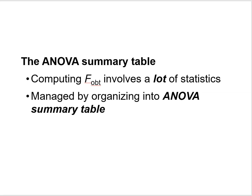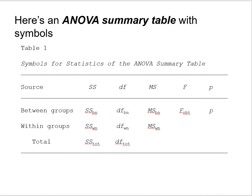The ANOVA summary table: computing an obtained F statistic involves a lot of statistics, which can get confusing if you're reading through a textbook chapter linearly. Most students and researchers find it easier to organize all of these statistics into an ANOVA summary table. Here's an example of an ANOVA summary table with symbols. Normally when you see one in a published journal article it won't have symbols — it'll have numbers — but I'm going to begin with the symbols.